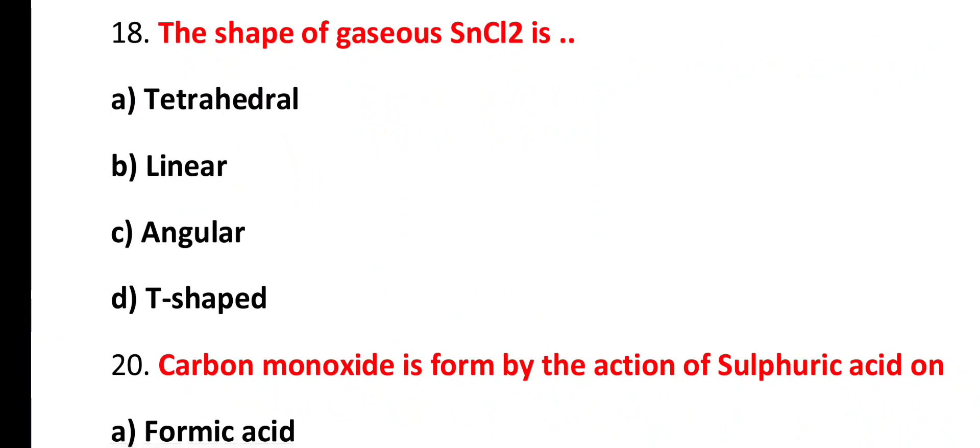Question number 17. The shape of gaseous SNCL2 is tetrahedral, linear, angular or T-shaped. Correct answer is option C. Gaseous tin chloride has sp2 hybridization and has one lone pair of electron. That's why its shape is angular.